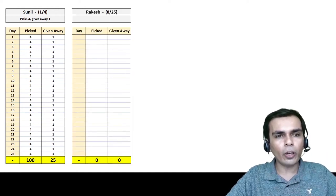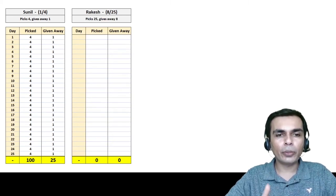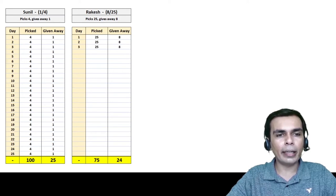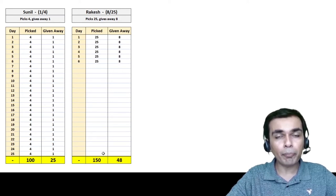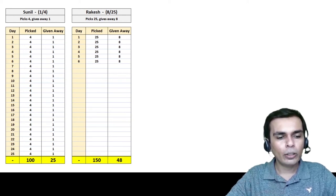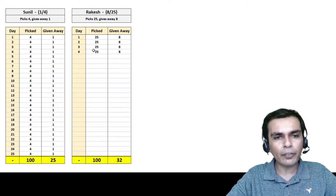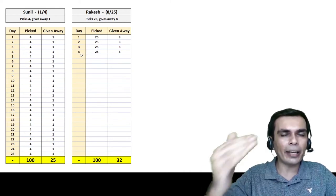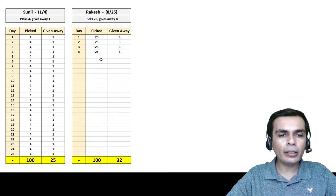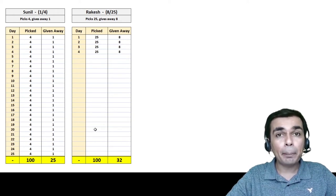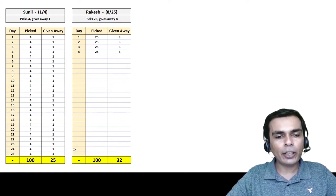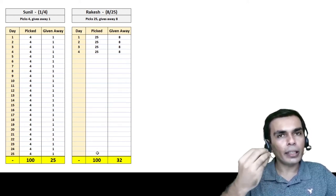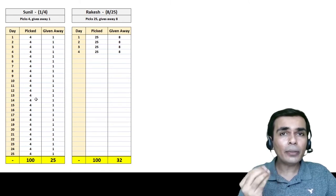Now let's do the same for Rakesh. He picks 25 and gives away 8. After day 1 he's picked 25 and given 8. We continue until we reach 100. Since 4 times 25 is 100, after 4 days he has picked 100 apples and given away 32 — because 4 times 8 is 32. So now we can compare: Rakesh gives away 32 per 100 and Sunil gives away only 25 per 100. Rakesh is more generous.